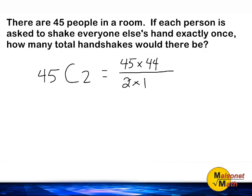For example, 2 and 44 can be cancelled out, 2, 22, and 1. So at the top, we have 45 times 22, and on the bottom we just have 1.